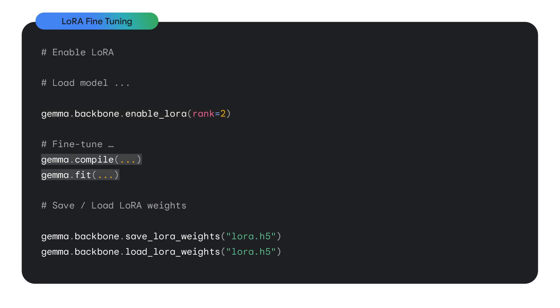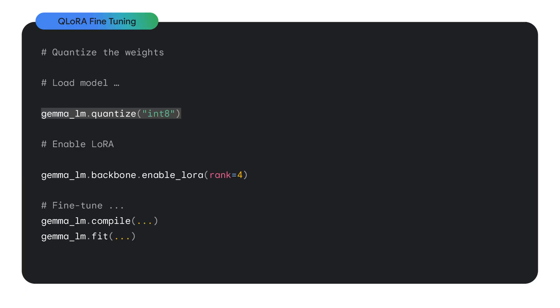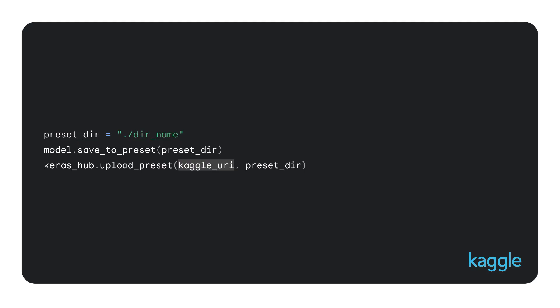Fine-tune the model using compile and fit. But what if you're still limited by GPU memory or want to run your model on smaller devices? That's where QLoRA comes in. QLoRA, or quantized LoRA, takes LoRA and adds another layer of optimization — that is, quantization. It converts the model data into smaller, more efficient formats. First, we quantize the weights. Next, we enable LoRA in the exact same way we did before. And then we compile and fit the model as usual. Now that you have trained your model, you can actually upload your weights to Kaggle and Hugging Face. Just save the model to your own preset directory and then you can use keras_hub.upload_preset to upload that preset to a Kaggle URL or a Hugging Face URL as well.